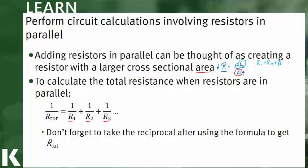When you're using this equation, if you just do a quick plug and chug, what you've really solved for is one over the total resistance. So after you crunch your numbers, make sure you take the reciprocal at the end to really solve for R total instead of one over R total.